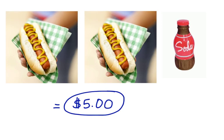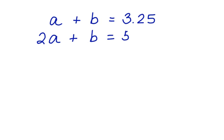Let's take a look at what we know and write a system of linear equations to describe it. First, we know that one hot dog, we'll call it A, plus one soda B, is equal to $3.25. Then we know that two hot dogs plus one soda is equal to $5, and we want to figure out the cost of a hot dog.